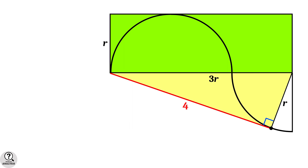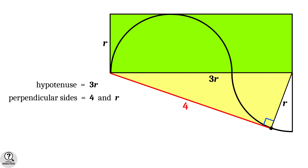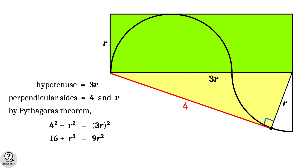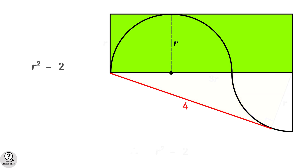Now you can see a right triangle here. Its hypotenuse is equal to 3R, and the perpendicular sides are 4 and R. Then, by applying the Pythagoras theorem, we get 4 squared plus R squared equal to (3R) squared. That is, 16 plus R squared equal to 9R squared. So 8R squared is equal to 16, and therefore R squared is equal to 2.